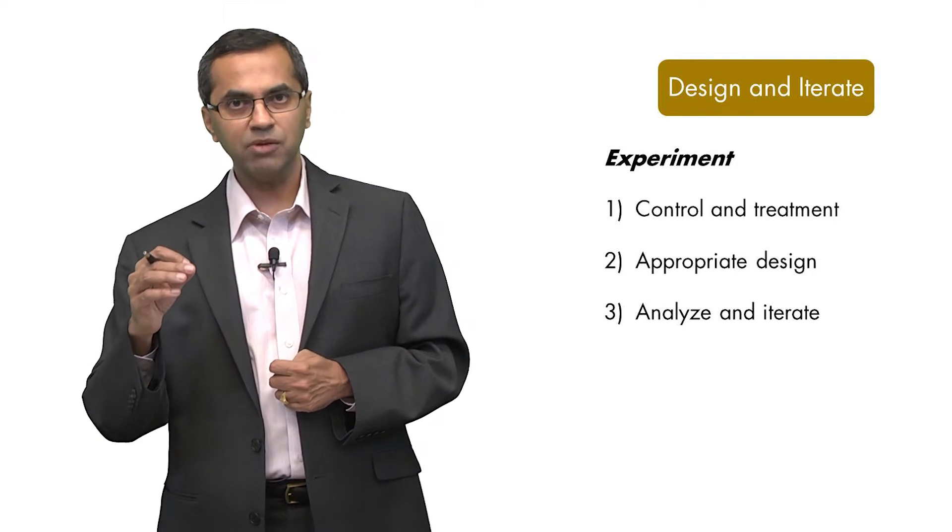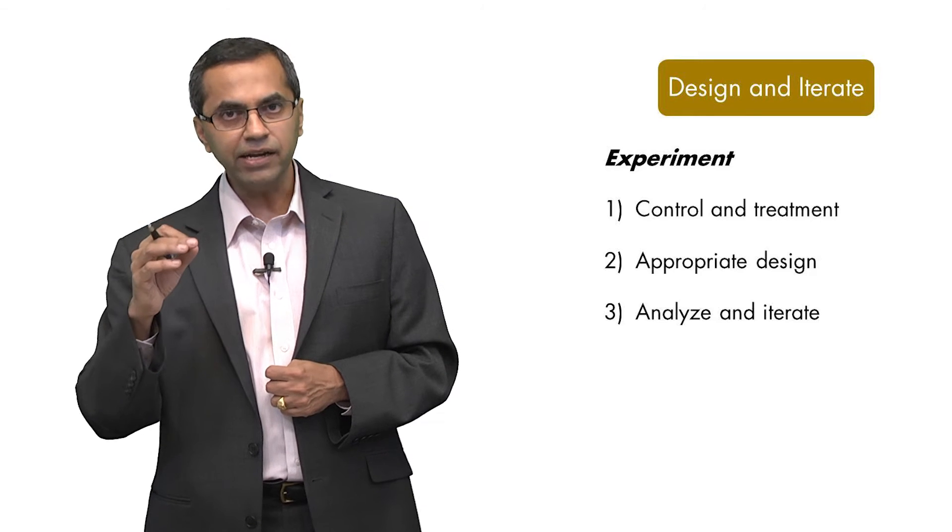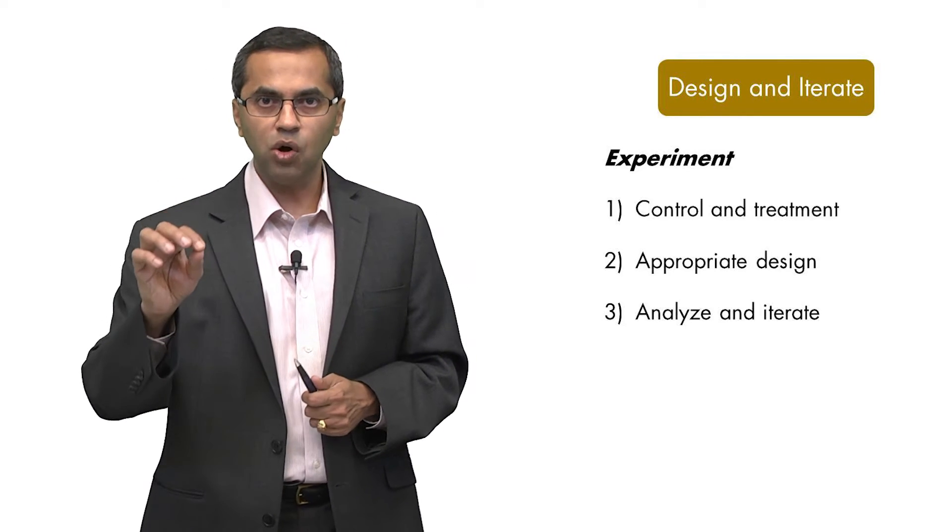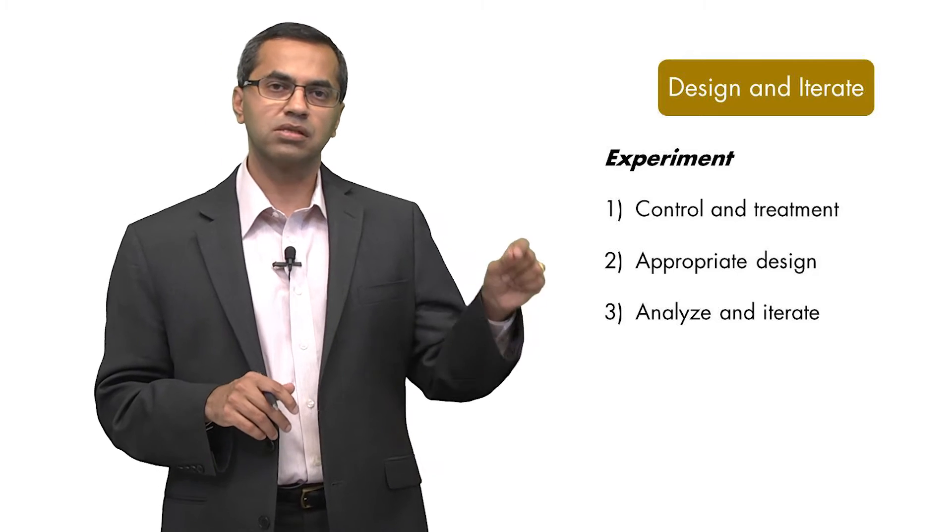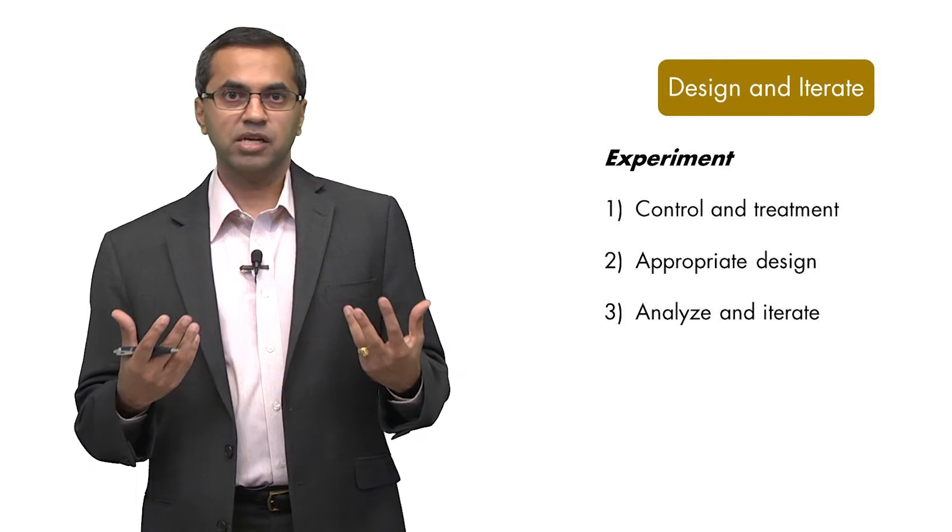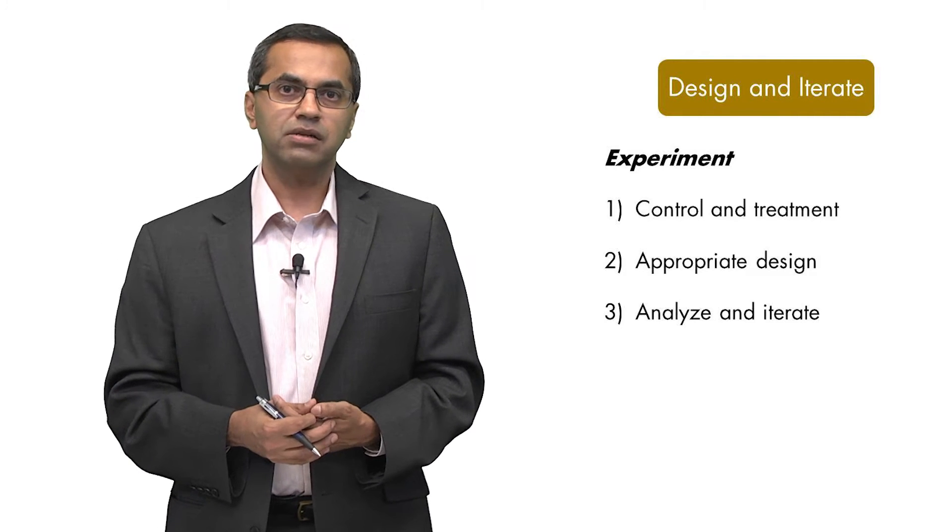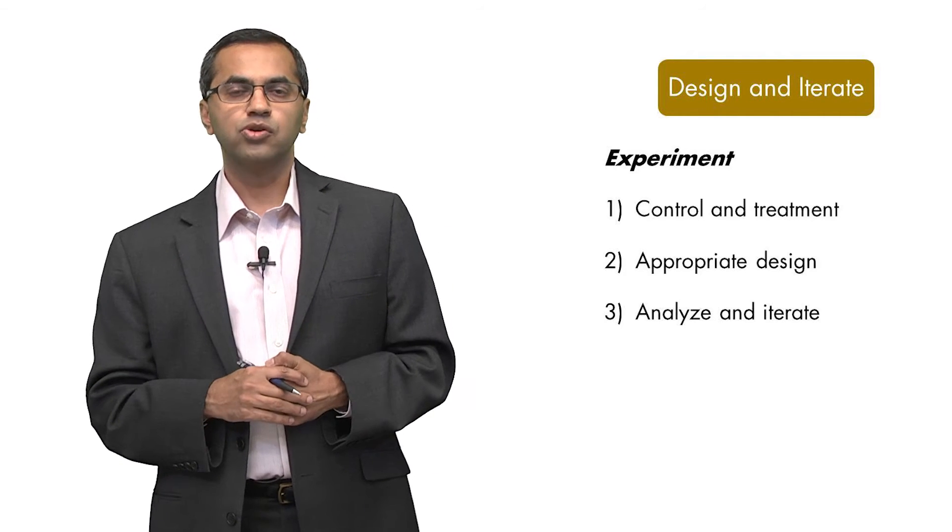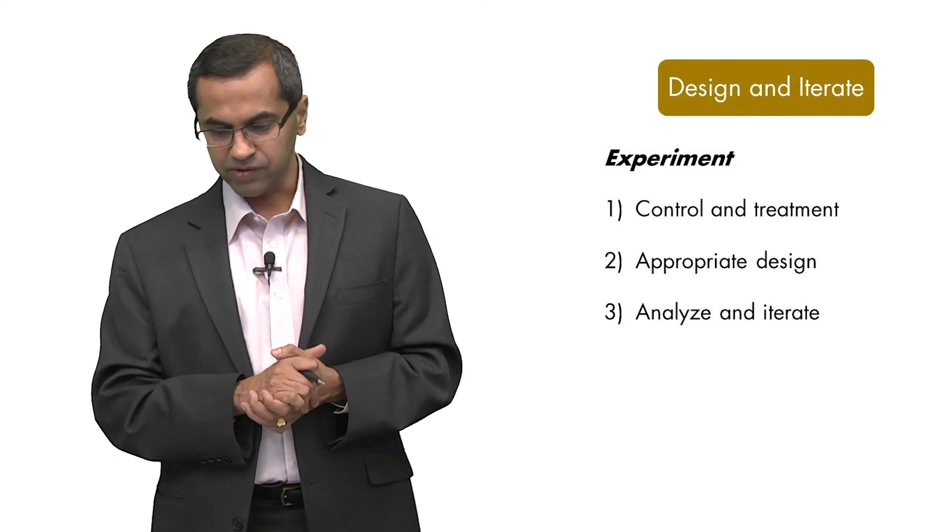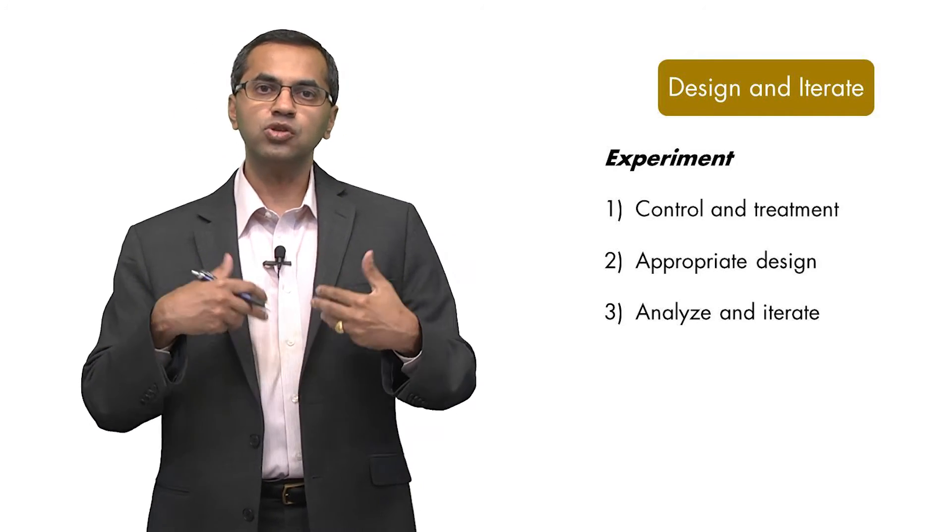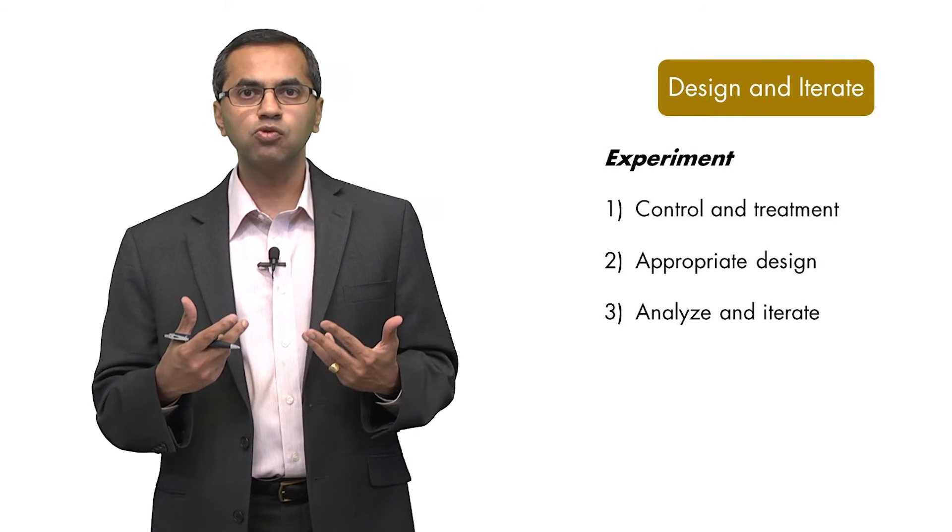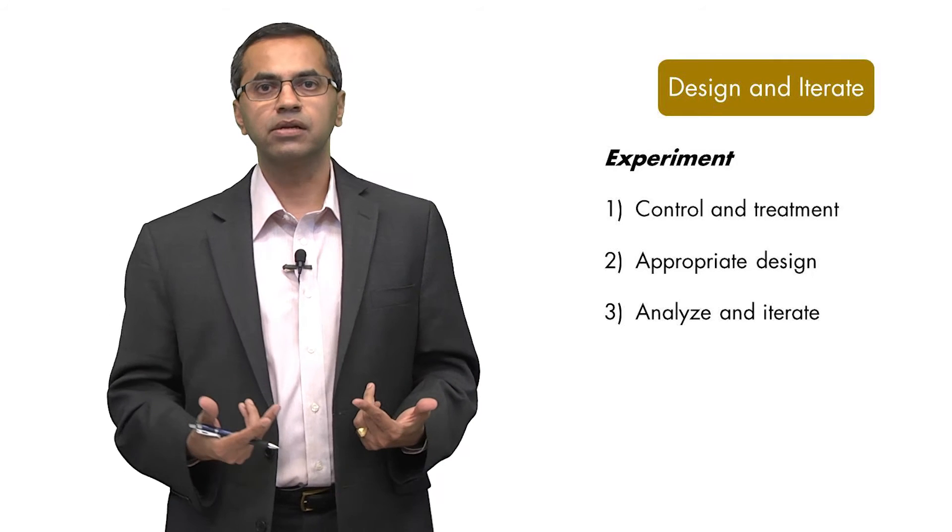You then need to design an experiment where you can effectively identify the cause and the effect, the fact that your selected nudge actually results in the outcome that you want it to do. Think about different designs that we've looked at. Are you going to use a simple two-conditioned design? Are you going to use a fully cross-design? Or are you going to use a before and after design? And then finally, once you get data back from your experiment, it potentially gives you room to iterate and update your nudge.